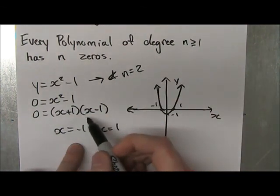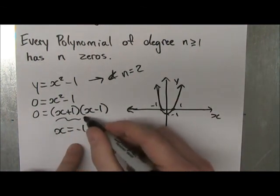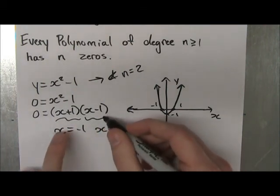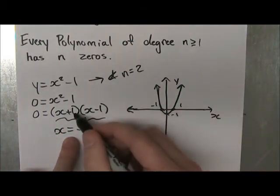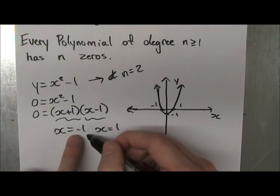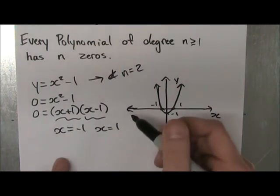And if we look, we find that it has two linear factors, and from each linear factor we can find one of the zeros. So from this one, we found that x equals minus 1, and x is equal to 1.